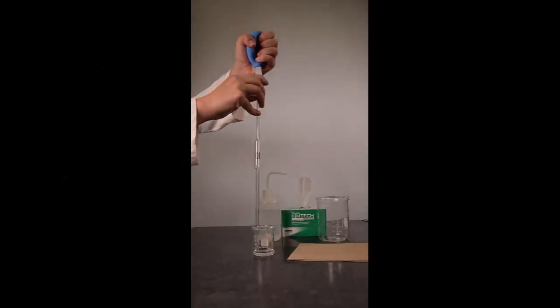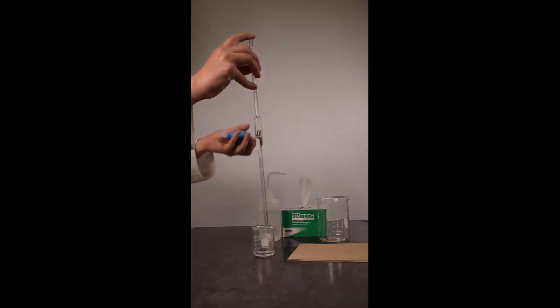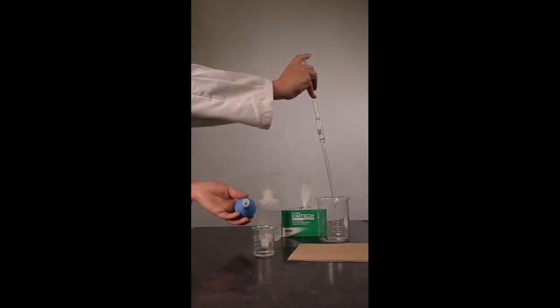When using the suction bulb to fill the pipette, make sure that the container from which the solution is being drawn contains more than enough solution to fill the pipette, and that the pipette tip is kept near the bottom of the container and well below the surface of the solution.